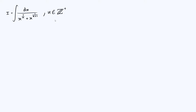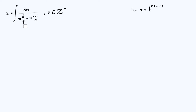We're going to do it by substitution, and the substitution we're going to do is to let x be some new variable t raised to the power of n times n plus 1. The reason for doing that is because n times n plus 1 is the lowest common multiple of n and n plus 1, because they're two consecutive integers. So when we do this substitution, the fractional powers on the denominator of the integrand will turn into integer powers, and the integral is going to be a bit more approachable that way.